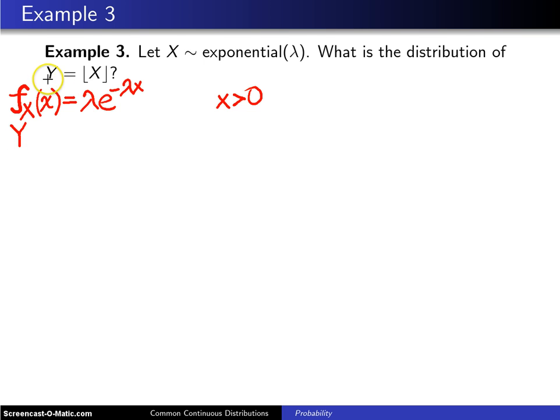How about y? y is the floor of x, and in this particular case, the floor of x will be a discrete random variable. Why will it be a discrete random variable? The answer to that is seen in a few examples.